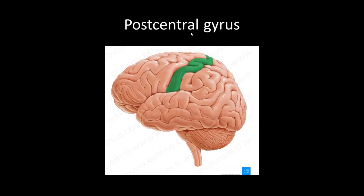Next we have the postcentral gyrus. Here is the central sulcus, and directly behind it we have the postcentral gyrus, which is a primary somatosensory area.